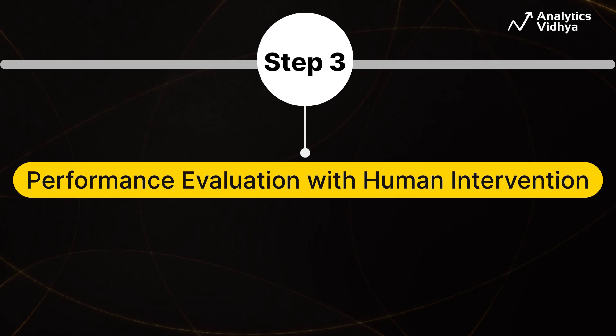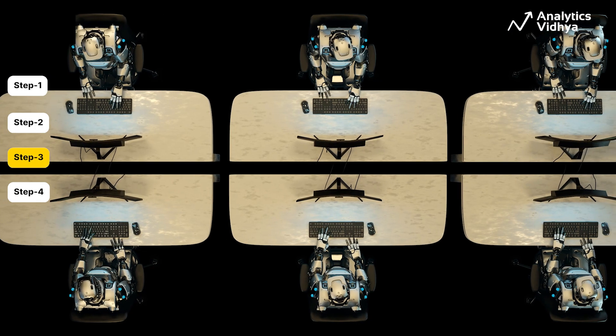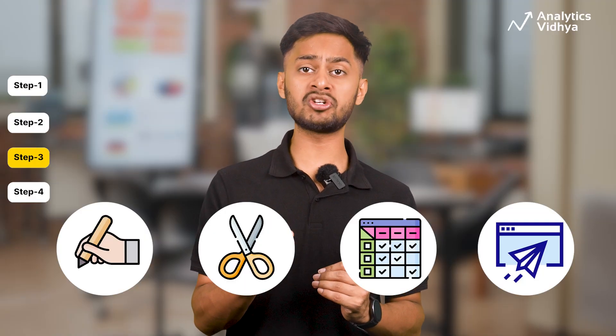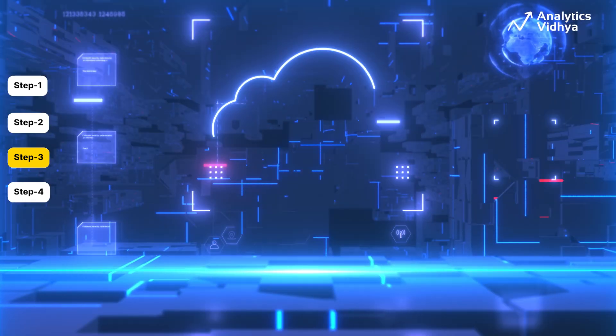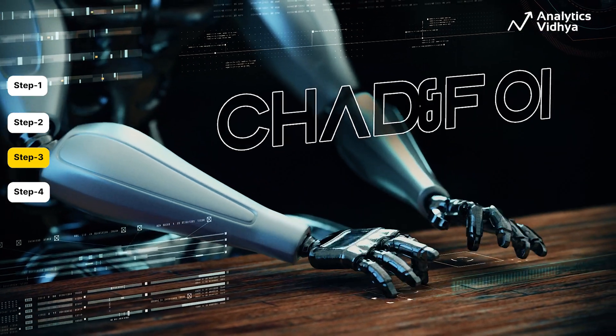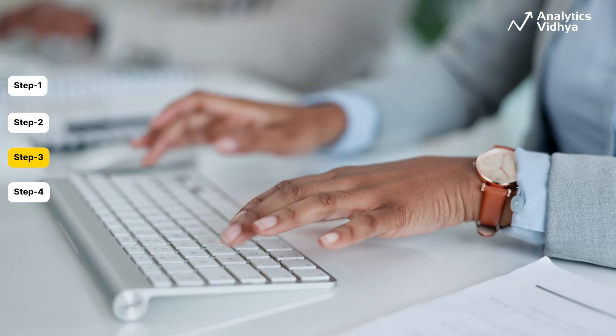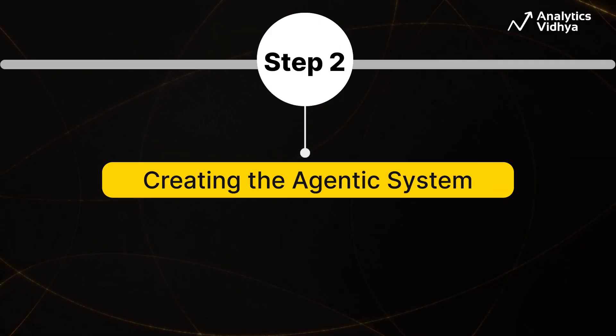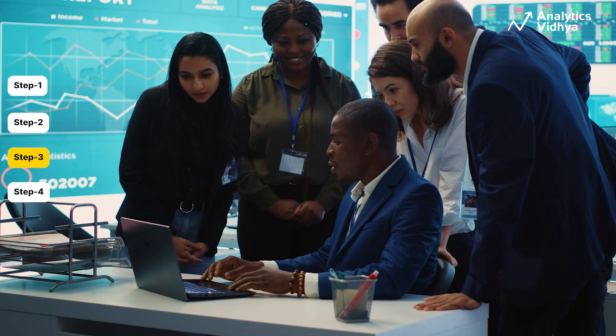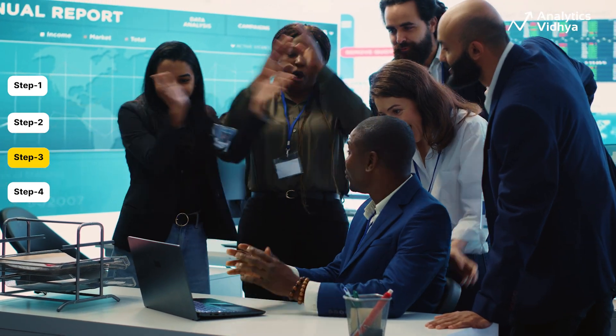Step 3: Performance Evaluation and Human Intervention. With our AI dream team — Writer, Editor, Planner, and Publisher — fully set up, it's time to move to the evaluation and optimization phase. Start by running tests with sample data to see how each agent performs and where tweaks are needed. Once the email is generated, the marketing team must carefully review it. Any necessary changes based on feedback should be made before deployment. If needed, return to Step 2 and adjust the agents until the desired result is achieved. This step must be repeated as many times as necessary to ensure the best outcome.